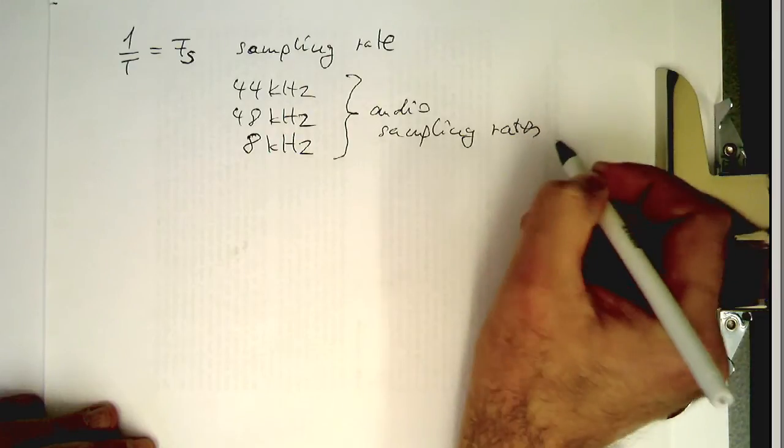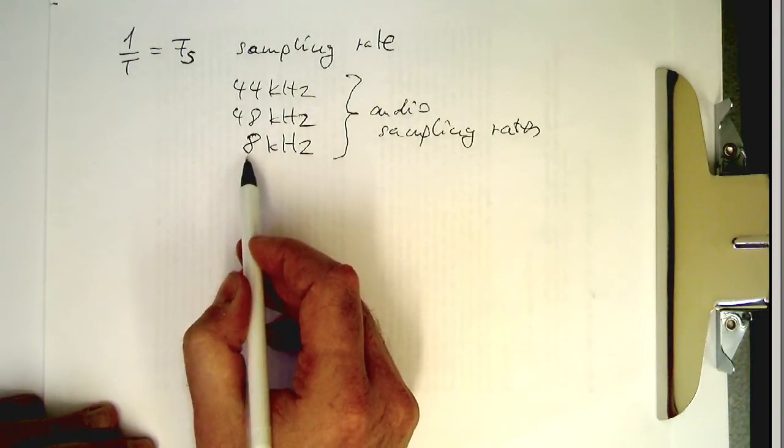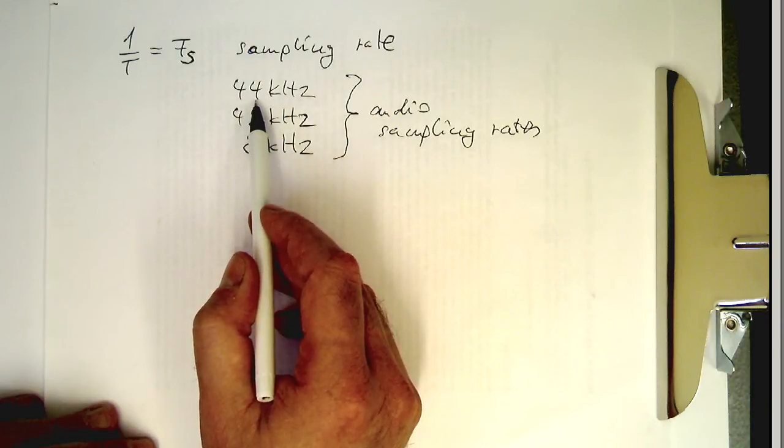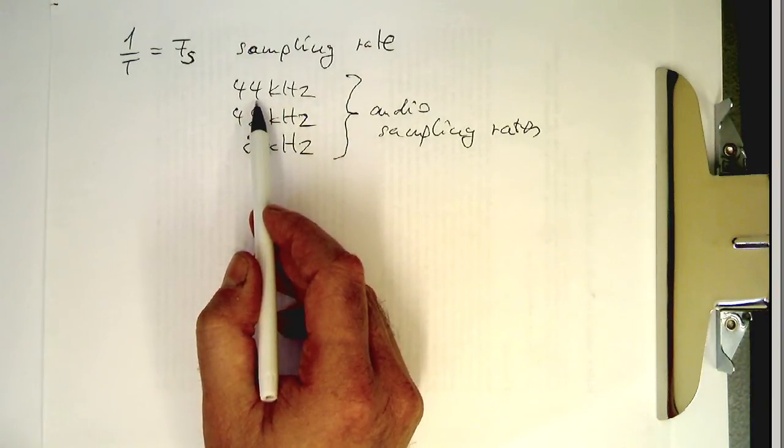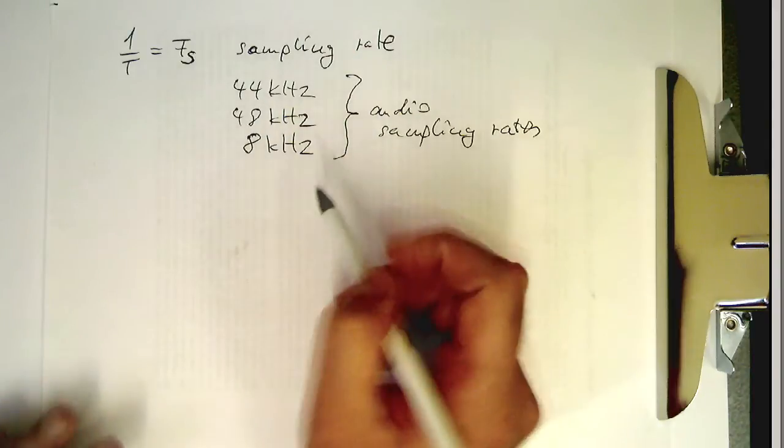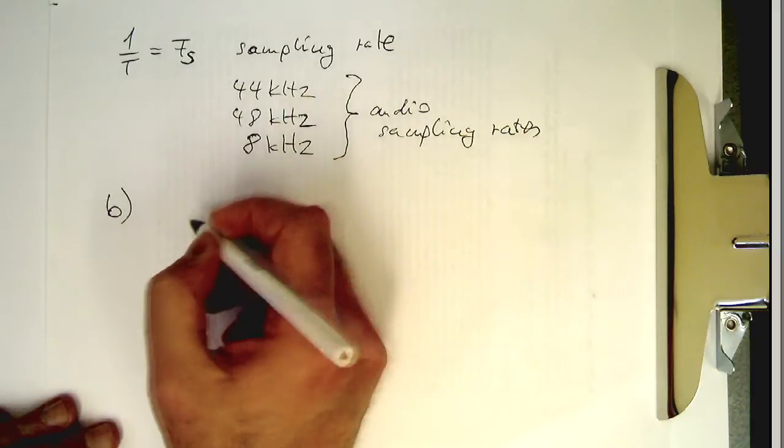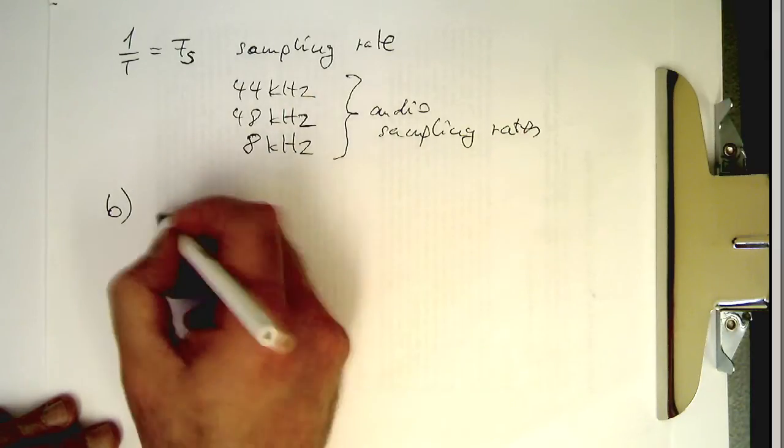So this means we are getting 8,000 numbers per second here, 48,000 numbers per second or 44,000 numbers per second here. So that's quite a lot already. Okay, so now let's go to point B. So the next step in this AD converter is quantization.